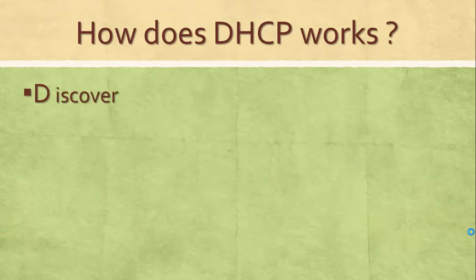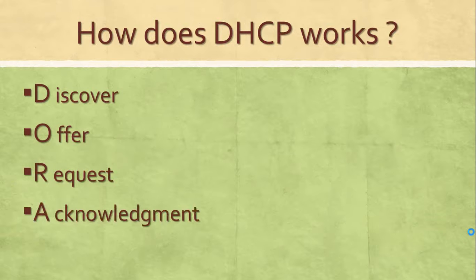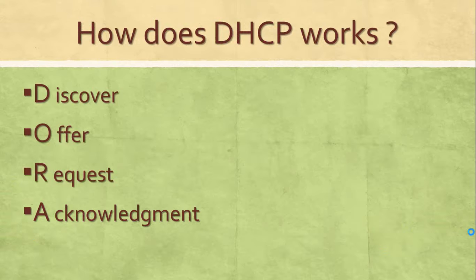Now, how does DHCP work? Discover, Offer, Request, and Acknowledgement — this is the DORA process, and by this process the DHCP server will assign the IP address to your computer.